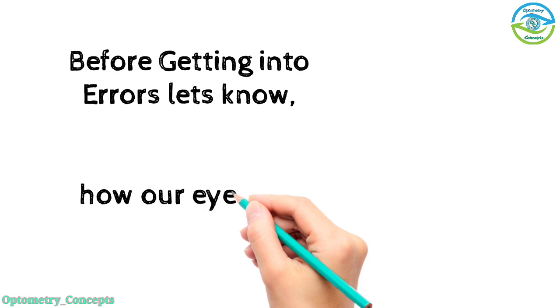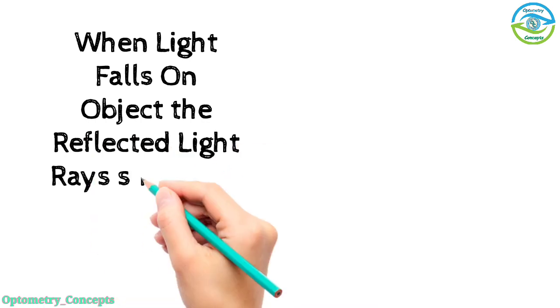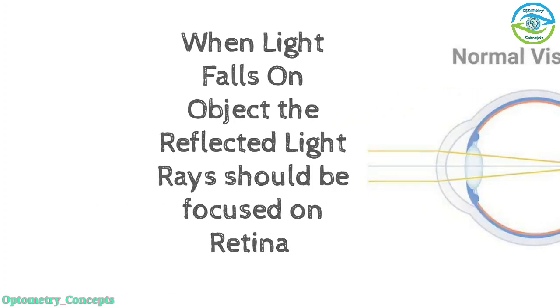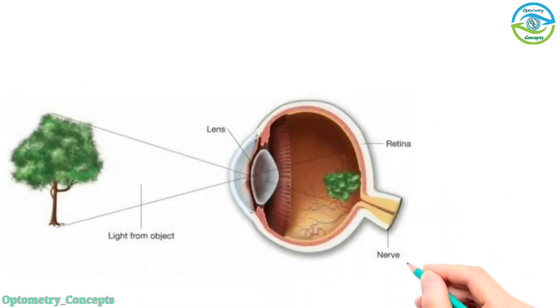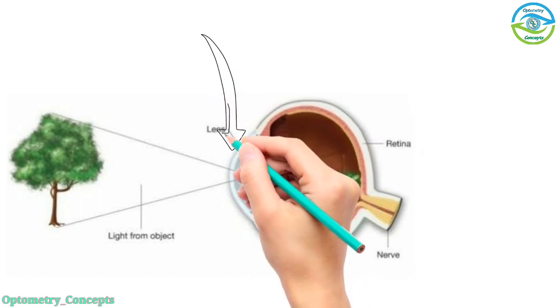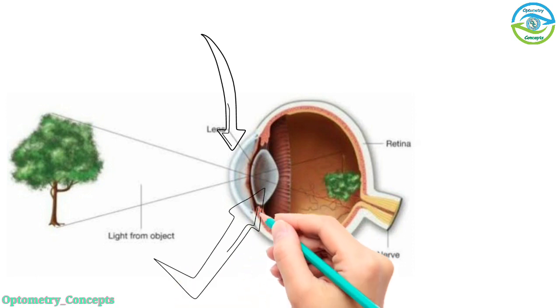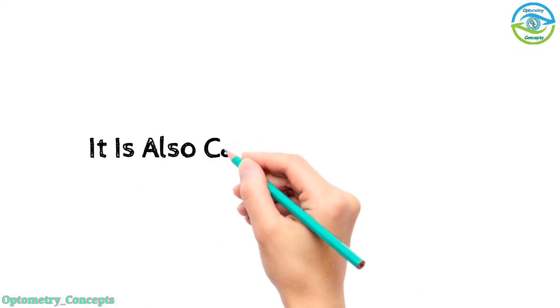Before getting into errors, let's know how our eyes see things clearly. When light falls on an object, the reflected rays should be focused on the retina to be seen clearly. Let's get this with an example. Suppose a plant is placed in front of the eye, the light falls on the plant and the reflected parallel rays travel to the eye. The cornea, which is a refracting structure, allows it to enter in and the rays come in contact to the lens, which is also called the converging lens. It allows the rays to focus on the retina, hence we see things clearly. It is also called as emmetropia.